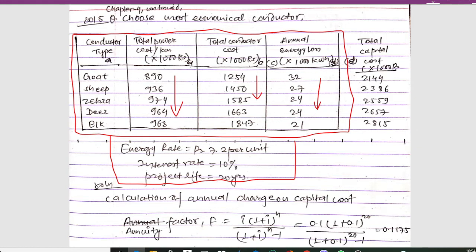If we calculate the total capital cost, it will be total power cost per kilometer plus the total conductor cost. So 890 plus 270 gives 2540 — wait, 254 here — and 2144. Similarly, 936 plus 1450 gives 2386. For Zebra, 974 plus 1585 gives 2559, and similarly for Deer and Alga we get their respective total capital costs.